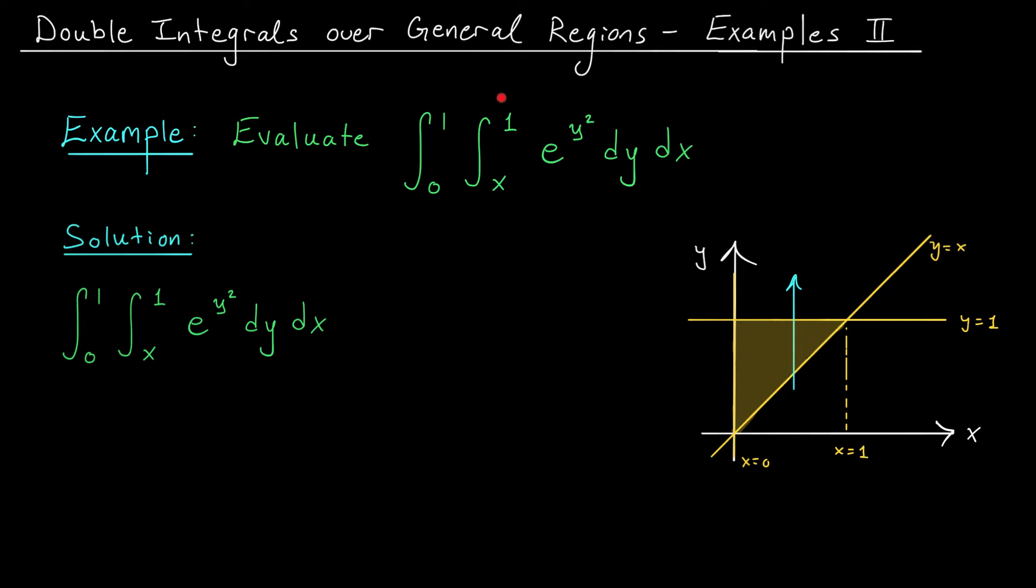Now, currently, our inner integral is written with respect to y, meaning we're viewing this as a region of type 1. But now we want to switch the order. We want to view this as a region of type 2. Well, if I draw this arrow moving from left to right, you can see that x is bounded by this left curve, x equals 0, and this right curve, x equals y. So this is going to be our new inner integral when we switch the order. We have the integral from 0 to y of e to the y squared dx.